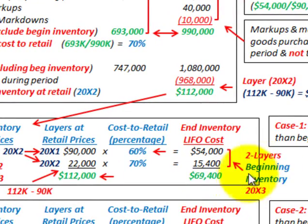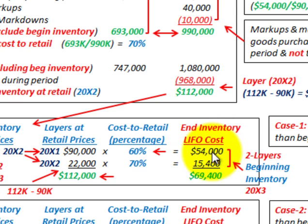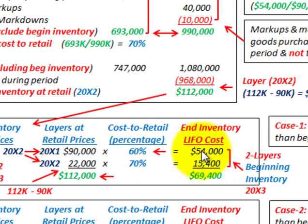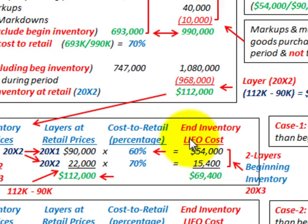Our beginning inventory in 20x3 would be comprised of these two layers: the $54,000 for the 20x1 layer and the $15,400 for the 20x2 layer, giving us $69,400 as ending inventory at LIFO cost. That takes care of the first case where ending inventory was greater than beginning inventory.